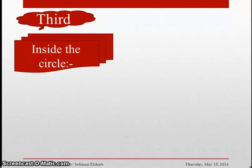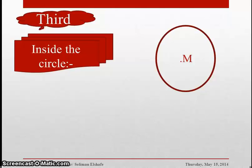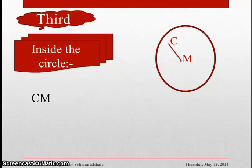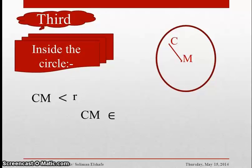Third: a point inside the circle. If we have a circle M in the plane and a point C in the same plane, such that the distance between C and the center is less than the radius of the circle, then point C lies inside the circle. This means CM belongs to the semi-closed interval [0, R).